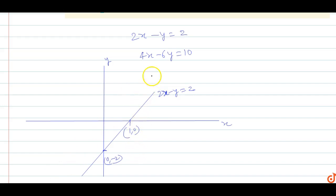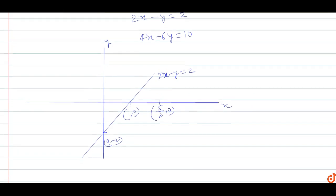For the second equation, 4x minus 6y equals 10, it cuts the x-axis at 10/4, which is 5/2, so the point is (5/2, 0). It cuts the y-axis at minus 10/6, which is minus 5/3, so the y-intercept point is (0, -5/3). This gives us the equation of the second line.